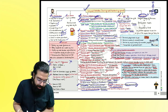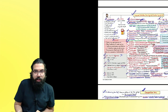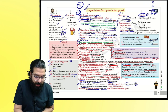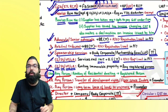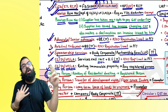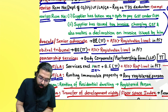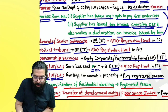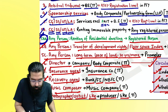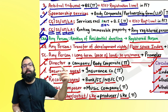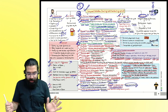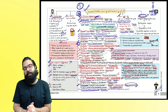The IGST Act details are applicable for CA Final, not the current level. The most important part to remember is section 9(3), which carries 4-5 mark questions. Key amendments: GTA — if unregistered, RCM applies; if registered, can opt for 5% or 12% forward charge, must issue tax invoice and declare on the invoice that GST is being paid under forward charge. Another amendment: renting of residential dwelling to a registered person — RCM applies. We are done with the charge of GST chapter. Congratulations!